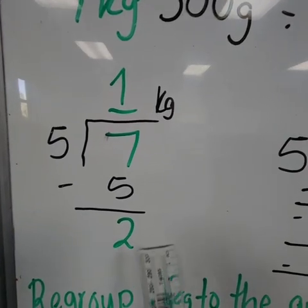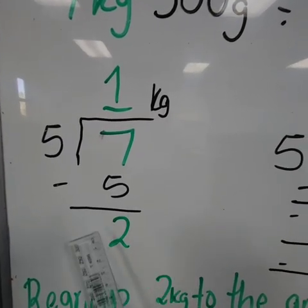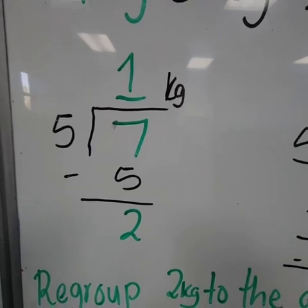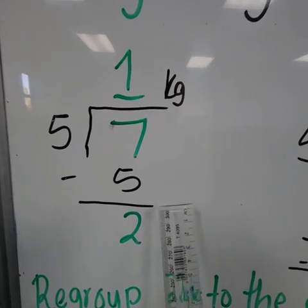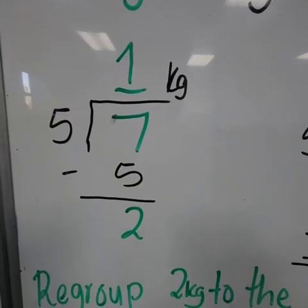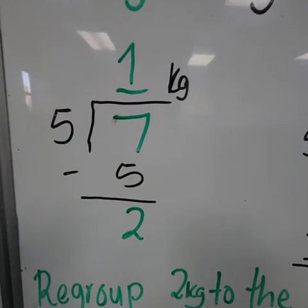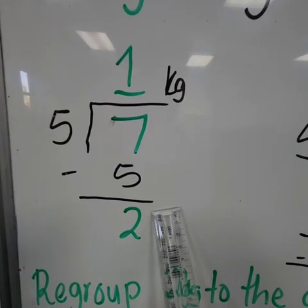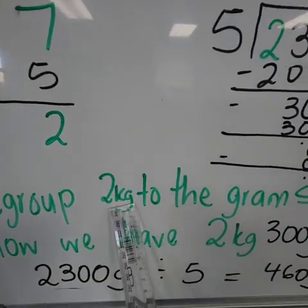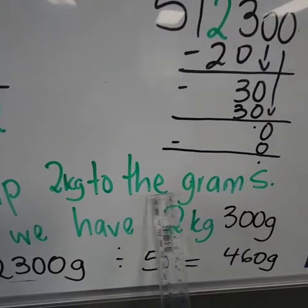So normally we would say that these 2 is our remainder when we are doing division. Yes, this is our remainder of the kilograms. So now what do we do? Because now we are left with this 2.